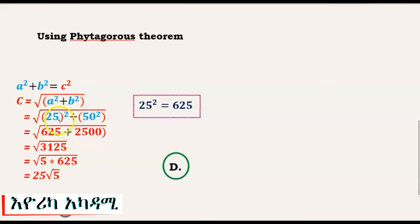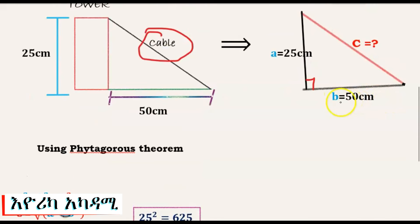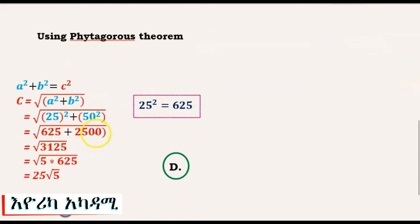So substituting: C equals the square root of 25 squared plus 50 squared, which equals the square root of 625 plus 2500, giving us the square root of 3125.